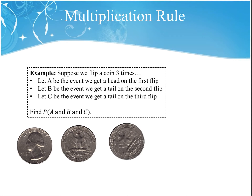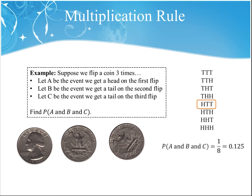There are a couple different ways to think about this. Using classical probability, we could list out all the possible results when we flip a coin three times. We find that we have eight total possible outcomes, and in that list of eight, there's one possibility where we have heads on the first, then tails, then tails. So using classical probability, the probability of A and B and C happening is one out of eight total, or 0.125.